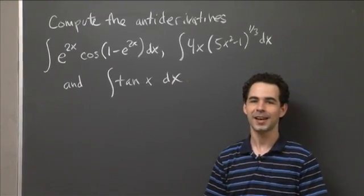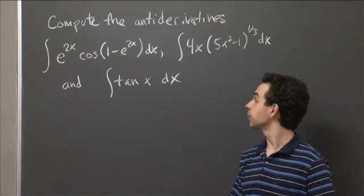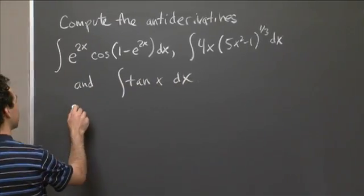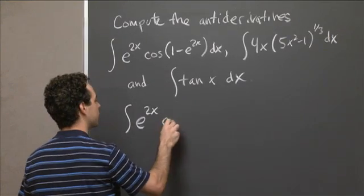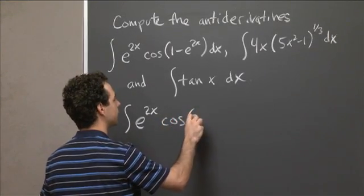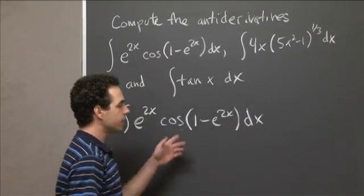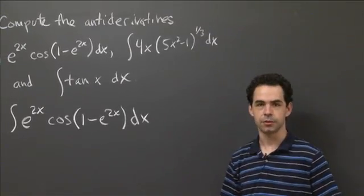All right. So welcome back. We have these three anti-derivatives. So let's take them in order. So this first one that I wrote is the anti-derivative of e to the 2x times cosine of the quantity 1 minus e to the 2x dx. So this problem seems to me like a good candidate for a substitution.